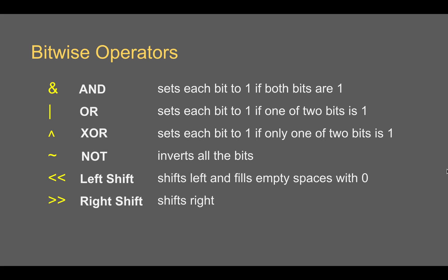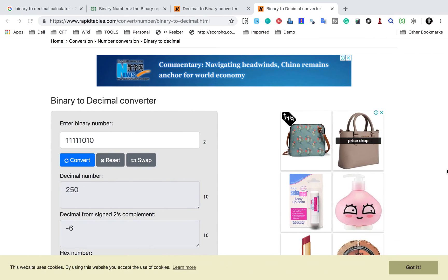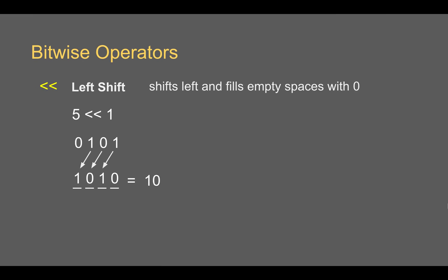Then we have the left shift and right shift operators. Left shift moves all bits to the left and fills empty spaces with 0. For example, 5 left shift by 1: binary 0101 shifted left becomes 1010, and filling the right with 0 gives decimal 10. If I convert 1010 to decimal, I get 10. That is how left shift works.